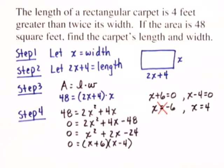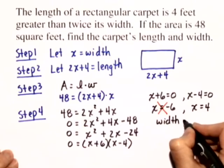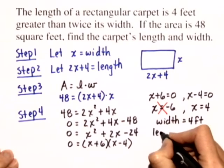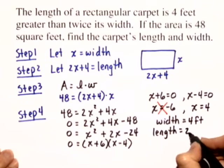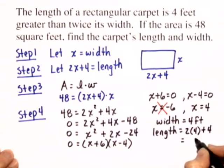So x equals 4 is going to be the width of our rectangle. The width is equal to 4 feet, and the length is equal to 2 times x, so 2 times 4, plus 4. In this case, the length is equal to 8 plus 4, or 12 feet.